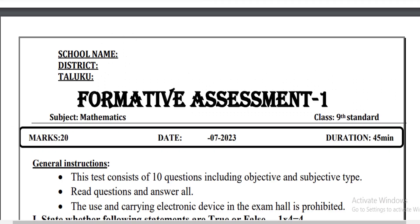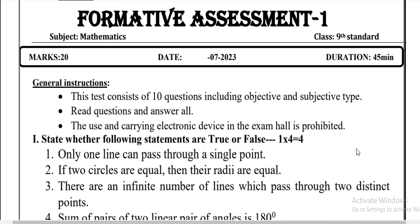This is the ninth standard FA1 formative assessment question paper, written for 20 marks. The duration is 45 minutes. General instructions: this test consists of 10 questions including objective and subjective. Read all questions carefully. The use and carrying of electronic devices in the exam hall is prohibited. The first section — state whether the following statements are true or false — has 4 questions worth 1 mark each.